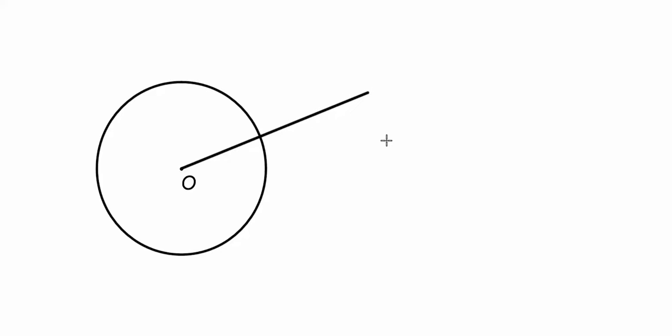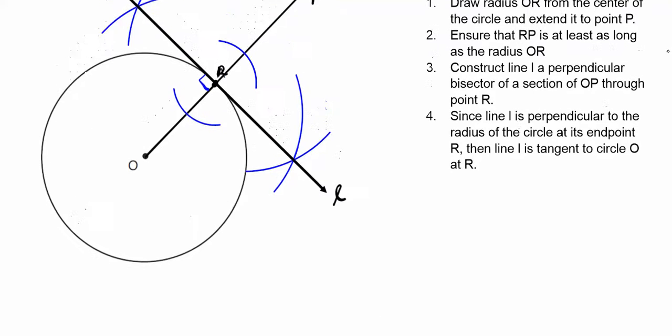This is the radius right here from the center to the circle, that's radius OR, but I'm going to extend it further out. So what I've constructed is segment OP that goes through the endpoint. This is the endpoint of the radius, let's call it R.